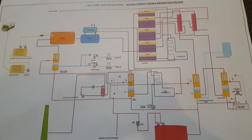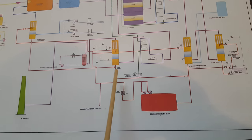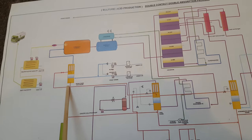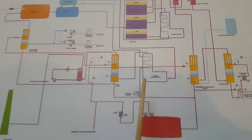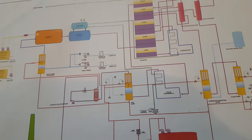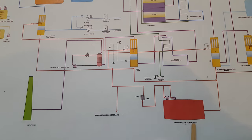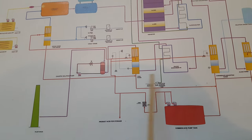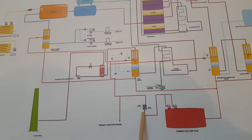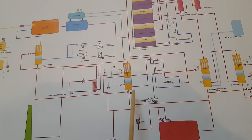Now I will explain you about the acid section. This is the common acid pump tank. This is the final absorption tower, this is the intermediate absorption tower, and this is the drying tower. The drying tower function is to dry the process gas. We circulate sulfuric acid in the drying tower, in the final tower, and in the intermediate absorption tower — these three have the same sulfuric acid circulating. Whatever acid gets drained from these three towers is collected in this common pump tank, and with the help of a circulation pump we circulate the acid by passing it to the plate heat exchanger.